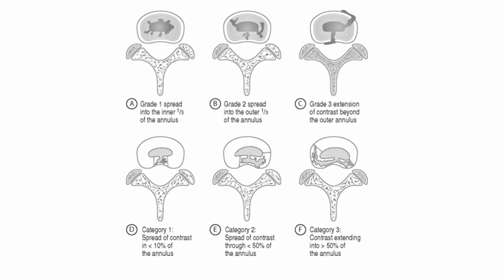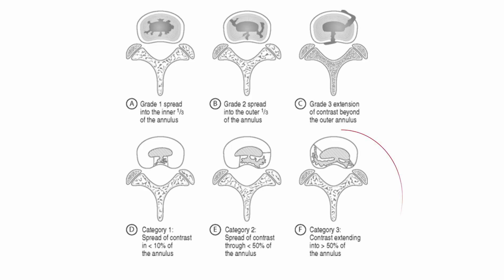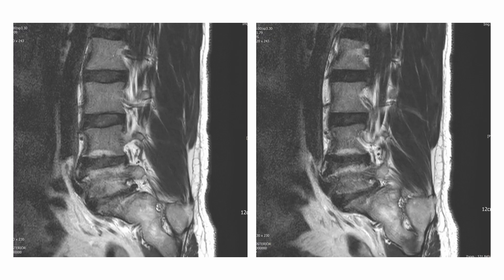Correlating these MRI findings with the presumed discography results, axial T2-weighted images for L4-5 and L5-S1 depict a diffuse circumferential annular tear. Parasagittal oblique scans from medial to paracentral regions revealed foraminal stenosis due to an extruded hard disc characterized by a bulging annulus and reduced height of the intervertebral foramen.